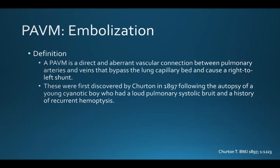A pulmonary AVM is a direct and aberrant vascular connection between pulmonary arteries and veins that bypasses the lung capillary bed and causes a right-to-left shunt. These were first discovered in 1897 following the autopsy of a young cyanotic boy who had a loud pulmonary systolic bruit and a history of recurrent hemoptysis.